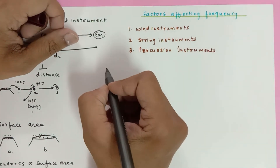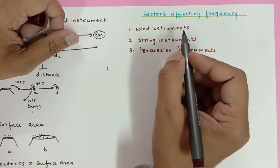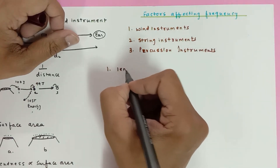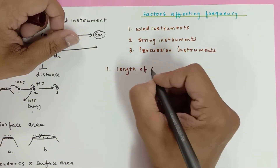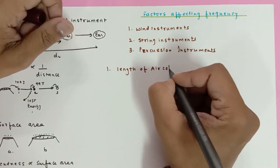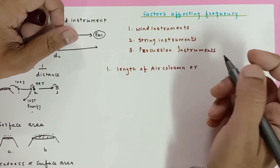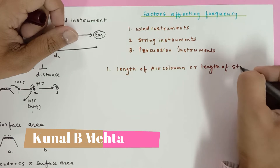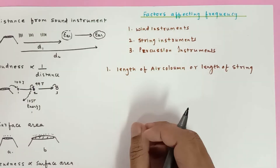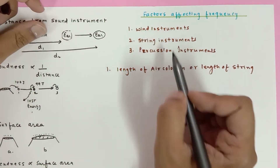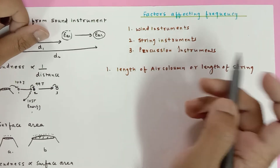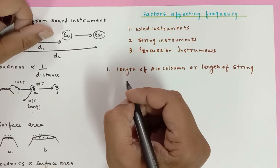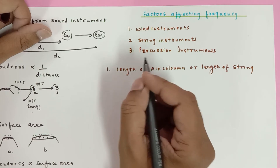The first factor that decides the frequency — and I'm going to mostly talk about wind and string instruments — is the length. The length may be the length of the air column for wind instruments, or the length of the string for string instruments. The proof of this is in the Grade 11 waves chapter.